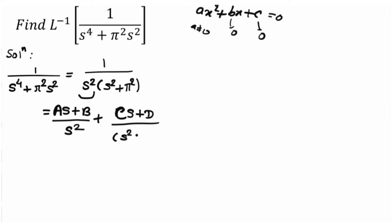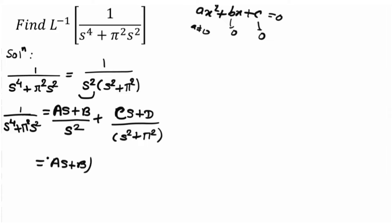Now cross multiply this term. We have 1 upon s to the power 4 plus pi squared s squared on the left-hand side, and on the right side we apply the partial fraction method. Cross multiplying, we get: A·s plus B into s squared plus pi squared, plus C·s plus D into s squared.